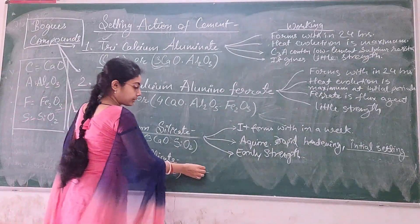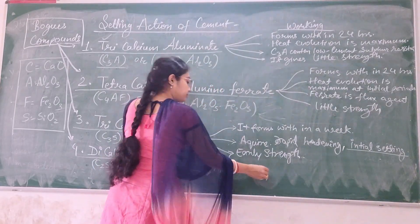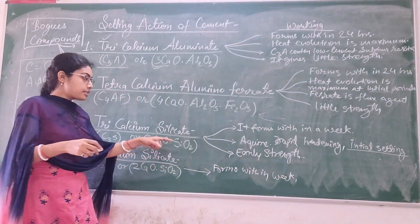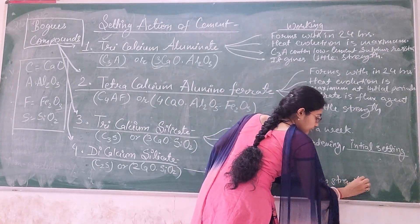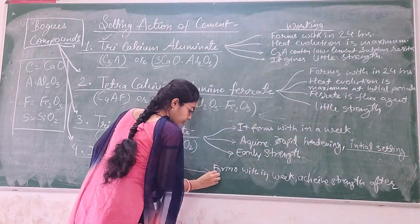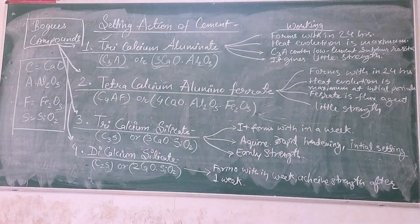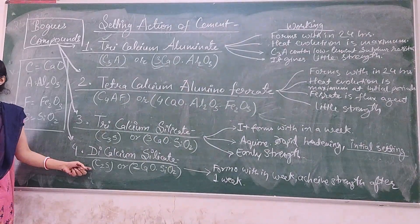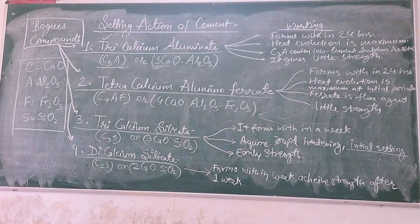Dicalcium silicate, C2S, also forms within a week. However, it is the opposite of C3S — it achieves strength after one week. Whenever the strength of any concrete is tested, the strength-providing category will be more for dicalcium silicate after the one-week curing period. C2S gives more long-term strength after drying of concrete.